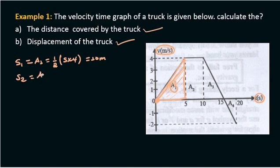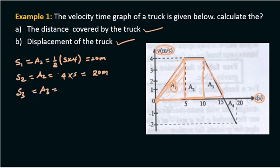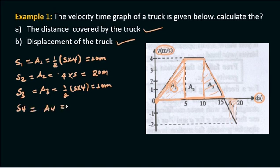Area 2 is a rectangle equal to length times width, which is 5 times 4, giving 12 meters. Area 3 is a triangle equal to one-half times base times height, giving 10 meters. Area 4 equals one-half times 2 times 5, giving 5 meters.